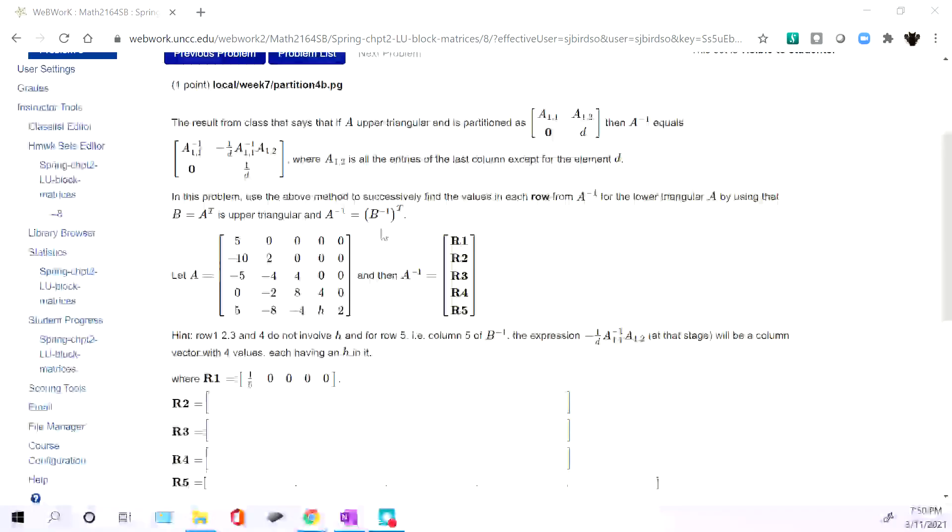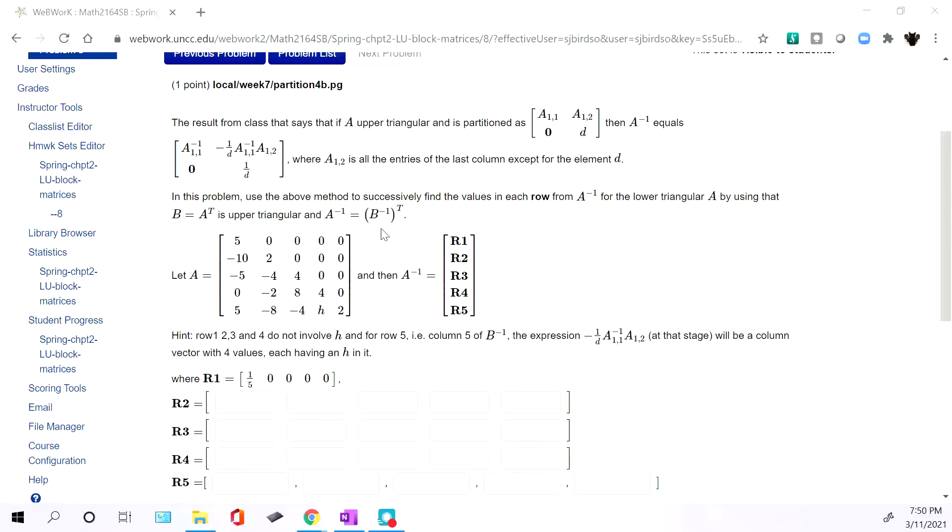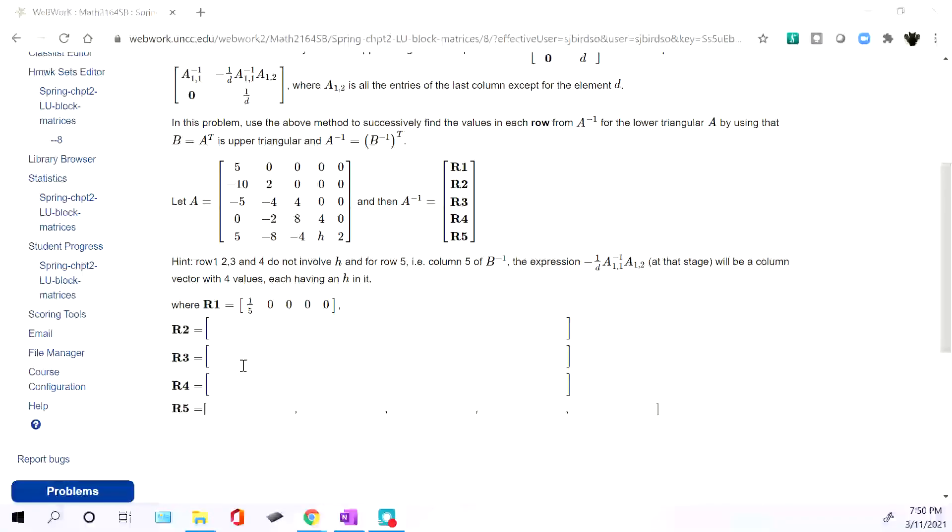So what we do is we'll take the transpose twice. First, we'll take the transpose of this guy. We'll calculate the inverse of the transpose using the formula, and then that answer, that inverse answer, you'll take the transpose the last time, and that's what you actually enter into these blocks down here, these empty text boxes down here.